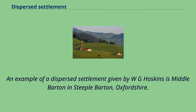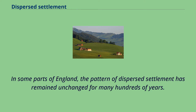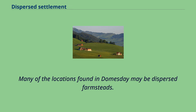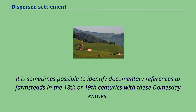An example of a dispersed settlement given by W. G. Hoskins is Middle Barton in Steeple Barton, Oxfordshire. In some parts of England, the pattern of dispersed settlement has remained unchanged for many hundreds of years. Many of the locations found in Domesday may be dispersed farmsteads.